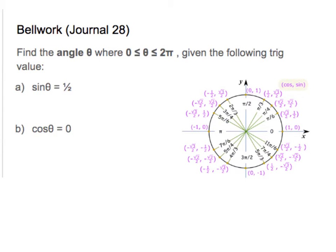We're asked basically to find what angle makes sine equal to 1/2. Keep in mind, sine corresponds to the y values, and cosine is the x's. So when sine is 1/2, that means the y is 1/2. So I'm going to circle all the places where sine is 1/2.